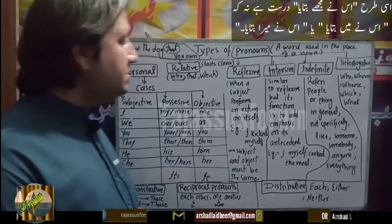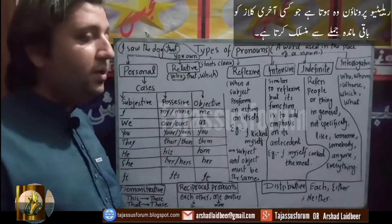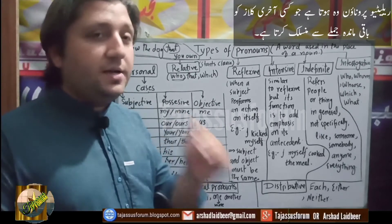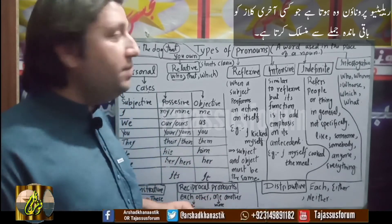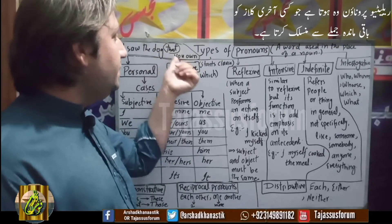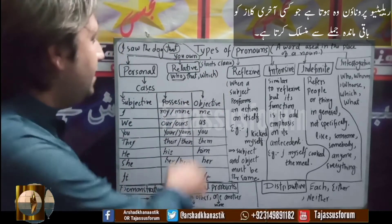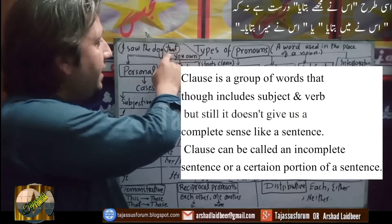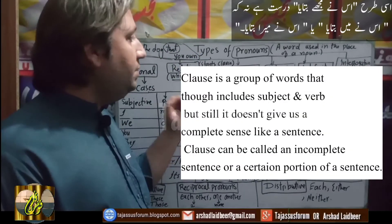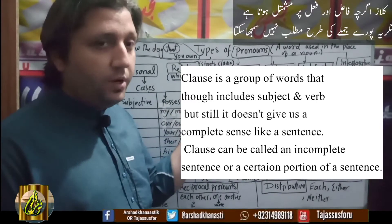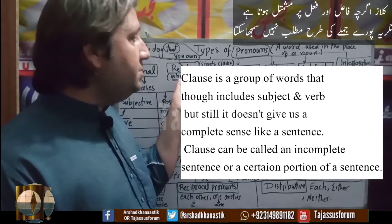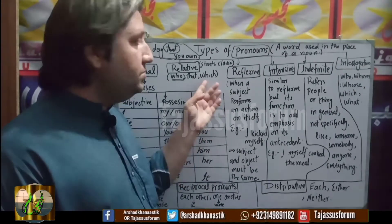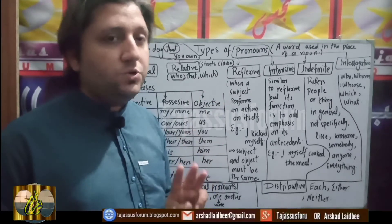Now we are going to discuss the next kind of pronoun, that is the relative pronoun. A relative pronoun connects the last clause of a sentence to the main sentence. For example: 'I saw the dog that you own.' Here 'you own' is the last clause, and it has been connected by 'that' to the rest of the sentence. Sometimes we also use 'who' and 'which' as relative pronouns. For example: 'This was the person who saw me yesterday.' And 'This is the car which had the boy.' So these three — that, who, which — are the relative pronouns.